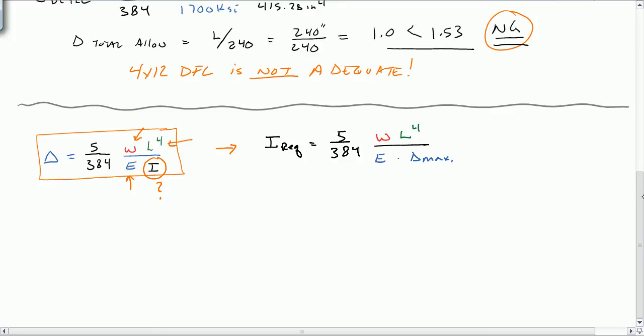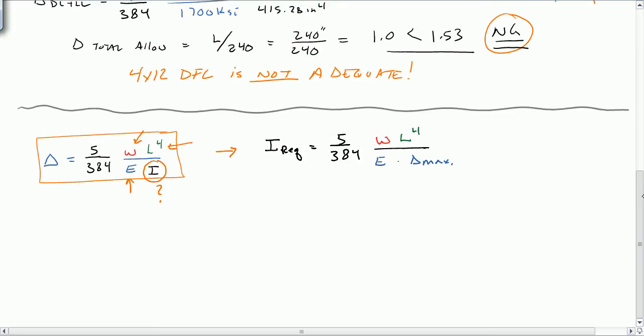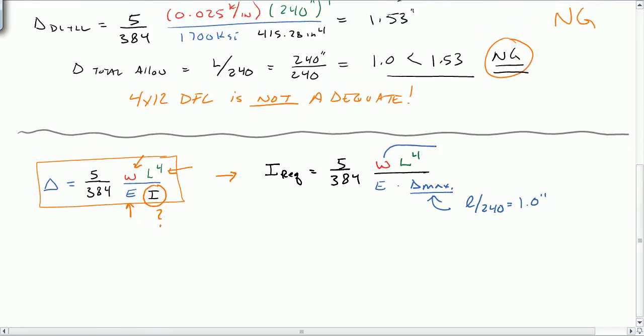And the one that didn't work, if you look up here, was the total. So our delta max here is going to be L over 240, which will be the 1.0 inches. Our loading here will be the total load. So that will be 0.025. So we're going to use the parameters from the one that didn't work to try to come up with an I required. And we'll expect that the value we come up with will be greater than the 415.